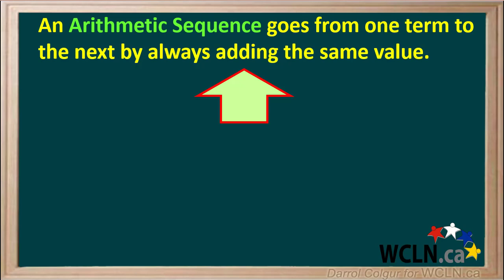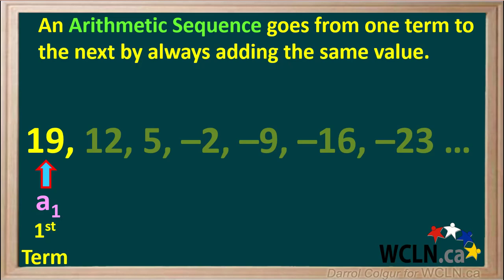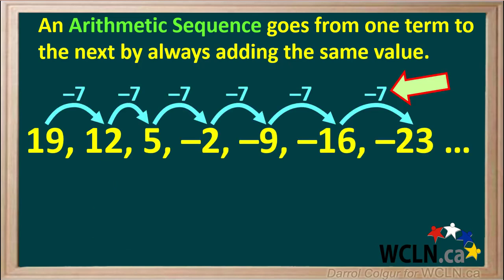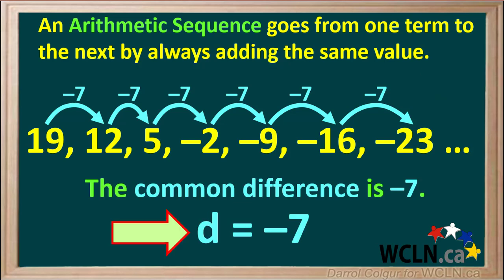To review: an arithmetic sequence is a set of numbers that form a pattern going from one term to the next by always adding the same value. The terms in a sequence are denoted by a lowercase a, where a1 is the first term, a2 is the second term, etc. The number added to each term to get the next is called the common difference, denoted by the letter d. As you move ahead in the topic of sequences, you will discover a simple equation that relates all the terms we've learned so far.